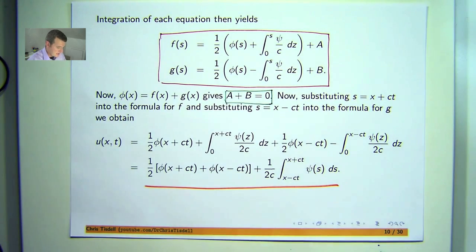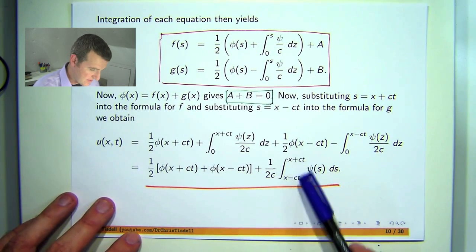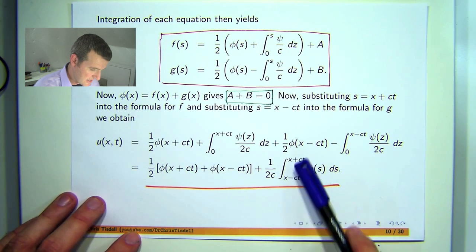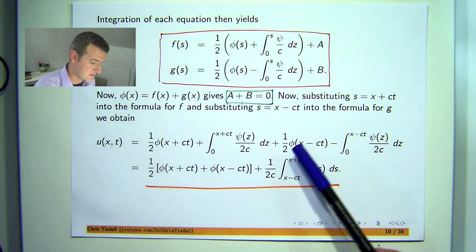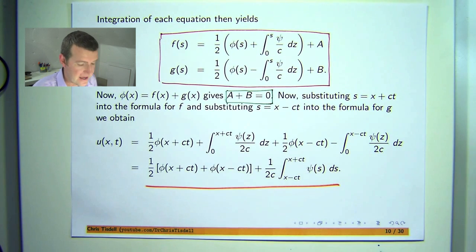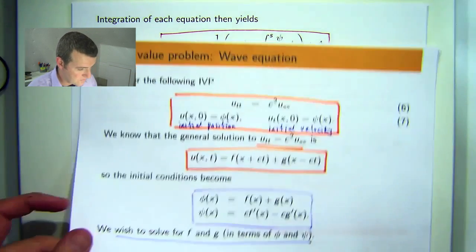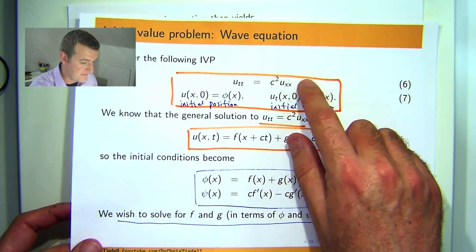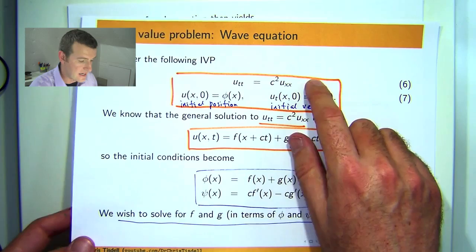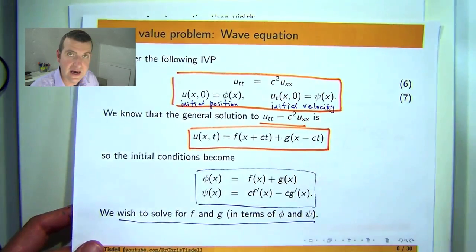Don't be too worried about these limits of integration. Just integrate this like you would a normal function of one variable and then just put these values of s in. So that's the solution to the wave equation with some initial position and initial velocity. In other videos, I'll be looking at the inhomogeneous wave equation. So you might have an extra function of x and t here. I'll also derive the wave equation in other videos as well. So I hope you can join me for those presentations.